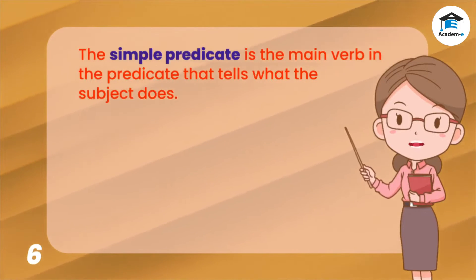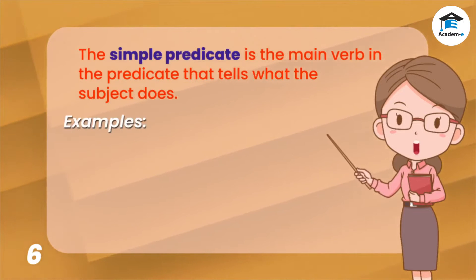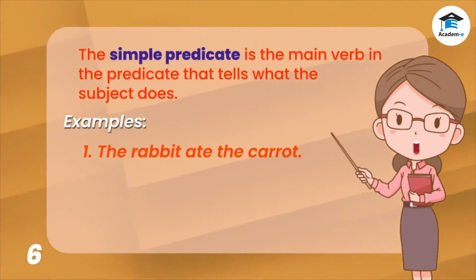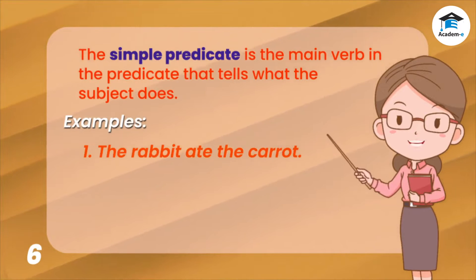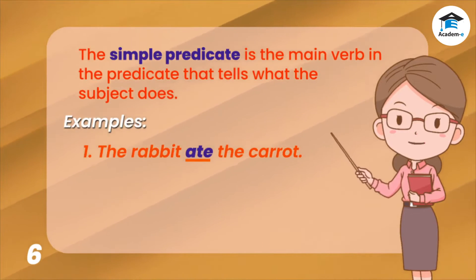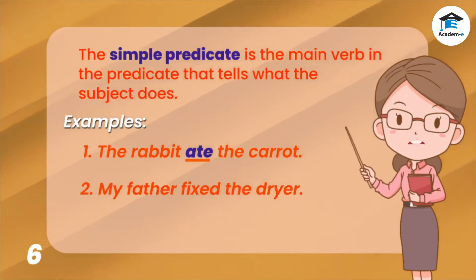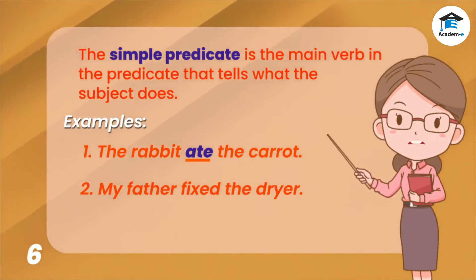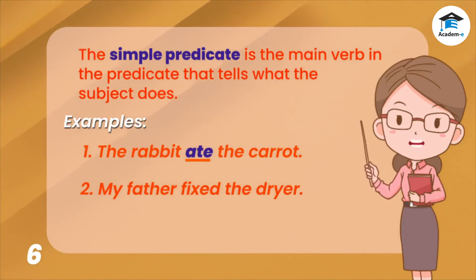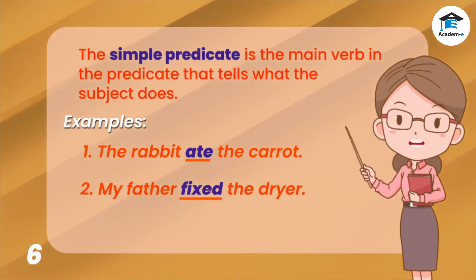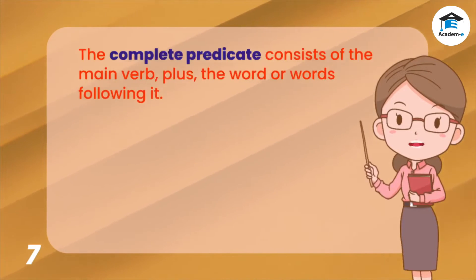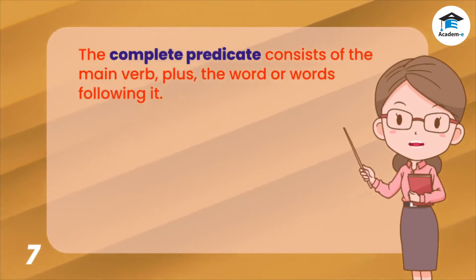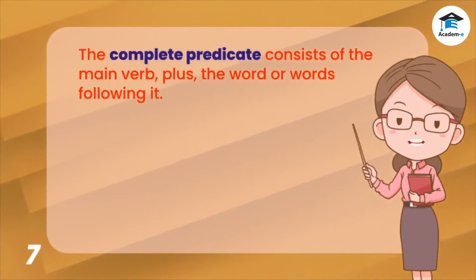The simple predicate is the main verb in the predicate that tells what the subject does. Let's analyze these examples. One: 'The rabbit ate the carrot.' In this sentence, the simple predicate is 'ate,' which is a verb. Two: 'My father fixed the dryer.' In this sentence, the simple predicate is 'fixed.'